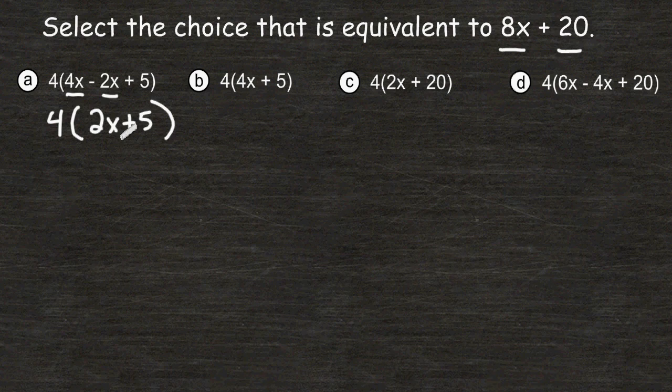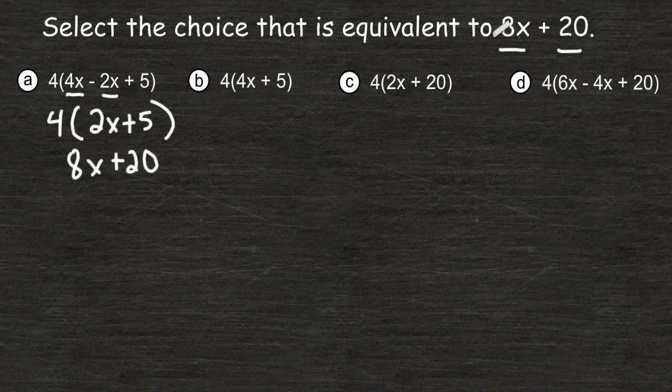Now we can use the distributive property to multiply this 4 by each term inside the parentheses. 4 times 2x is 8x, and 4 times 5 is 20. So for choice A, we have simplified that expression to 8x + 20, which is the same thing given in the problem.